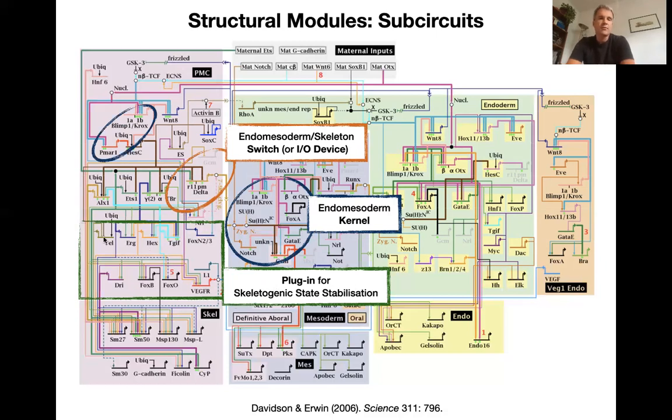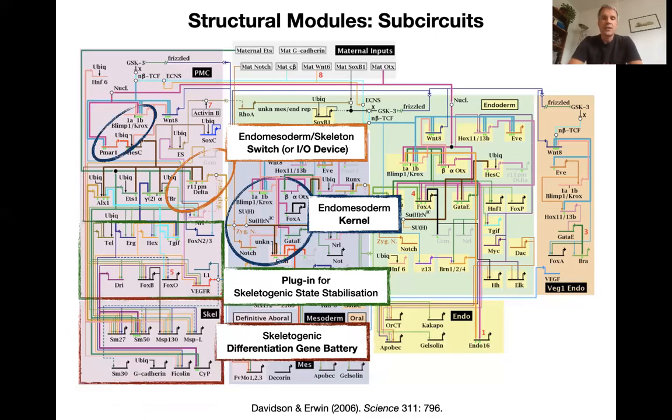And so these are transcription factors and they mediate the effect that is coming from the kernel via these switches down to what they call the skeletogenic differentiation gene battery. A differentiation gene battery is the set of genes that are actually enacting the changes, the differentiation changes in a cell. So they are structural proteins. For example, coherence, you can see here, and other factors that are causing the actual differentiation.